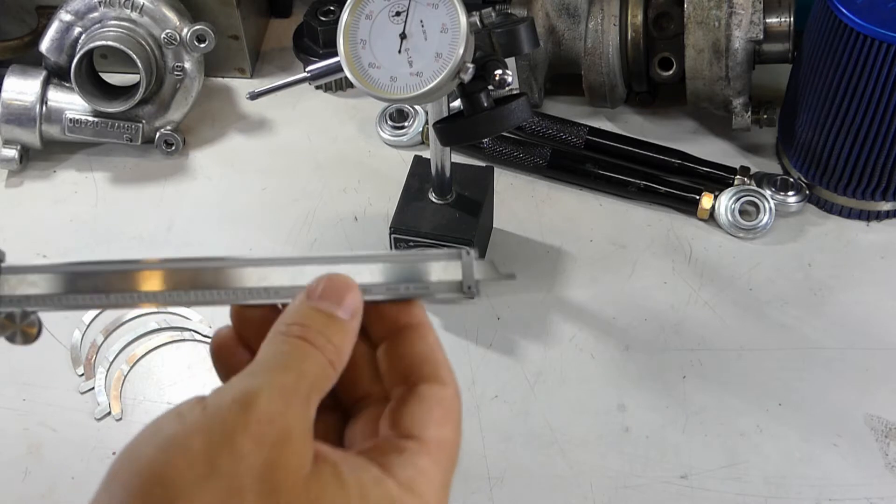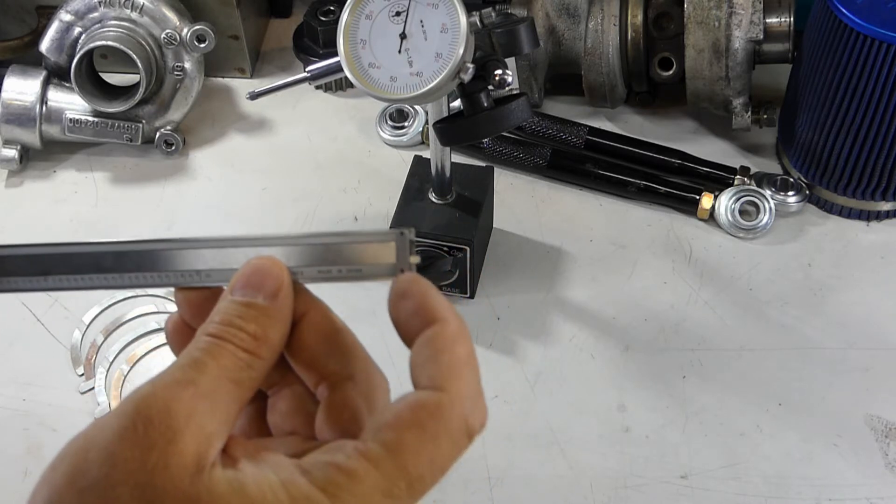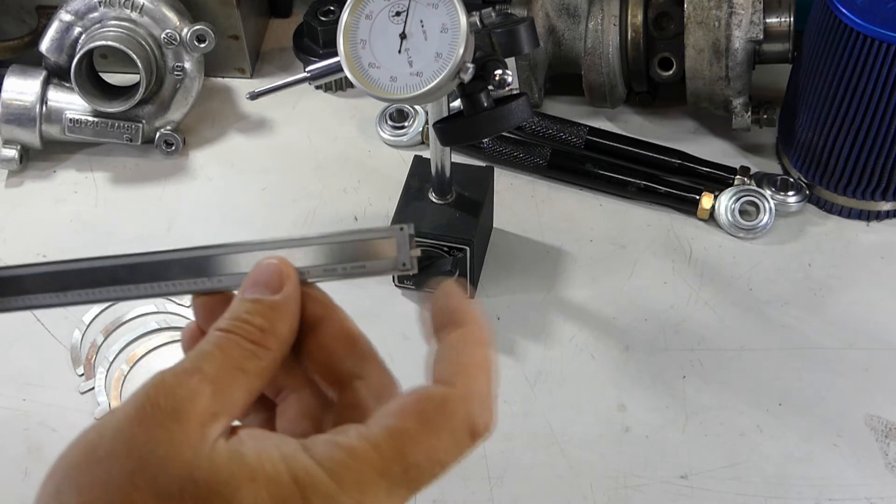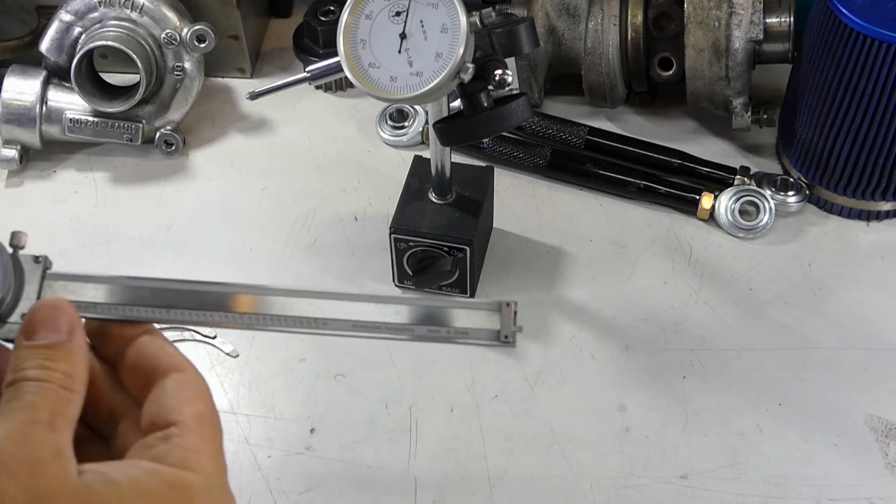You even have on the other end a depthometer. This will actually measure depth. You can come in there and say, how far has my head been ground down or re-milled? You've got a wear surface on there, you can measure it with the little depth gauge on the very end of it.